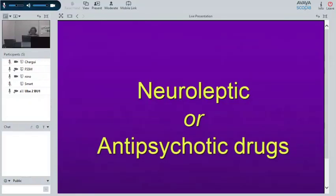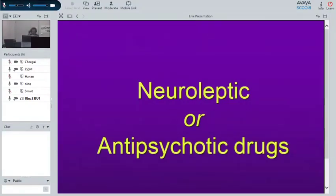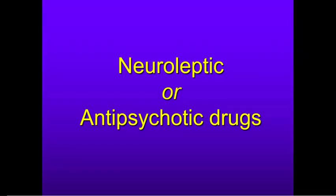Today we will cover neuroleptic or antipsychotic drugs. Neuroleptic means 'which takes the nerve.' Nowadays we use the term antipsychotic drugs, but even more, the International Union of Pharmacology has indicated that terms like antipsychotic, antidepressant, and anxiolytic are no longer clear. The correct denomination should be 'correcting drugs for monoamines.'